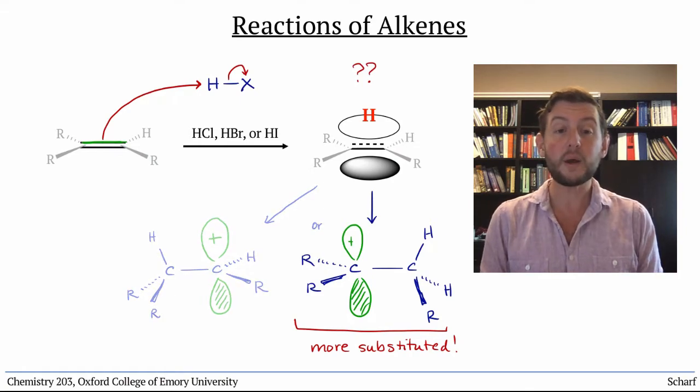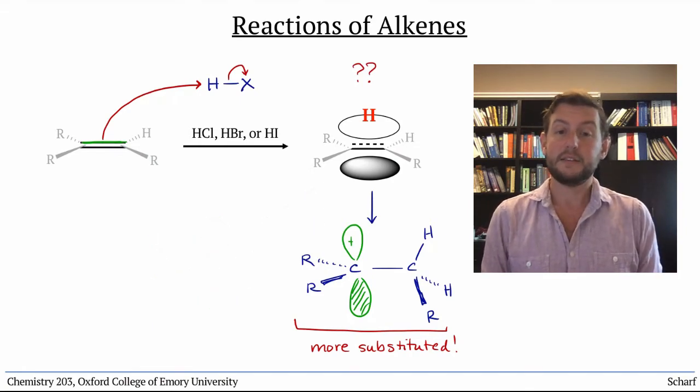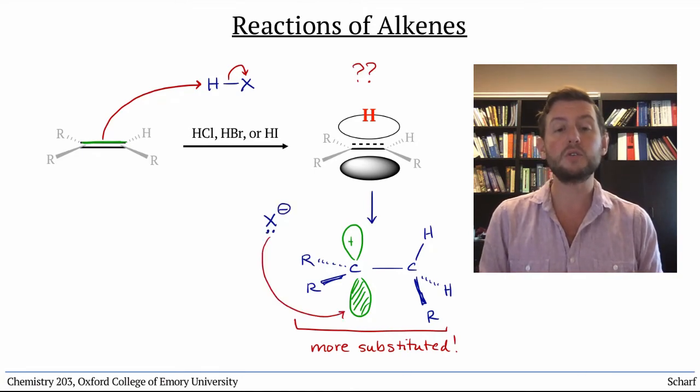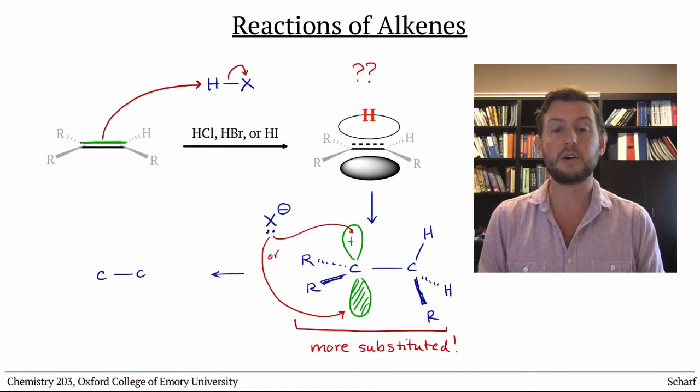And we already know what happens with carbocations. They're hungry for electrons. And the x minus that was produced in the previous step can come and satisfy that carbocation.